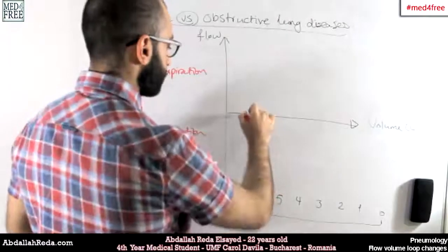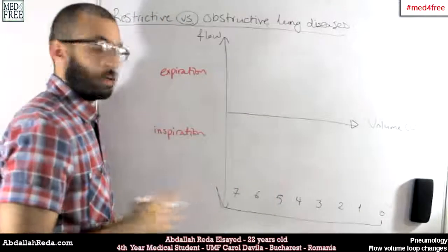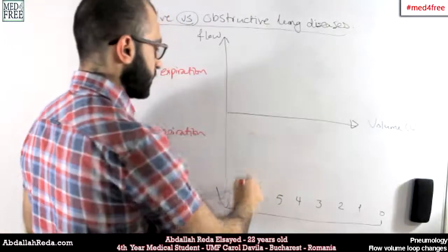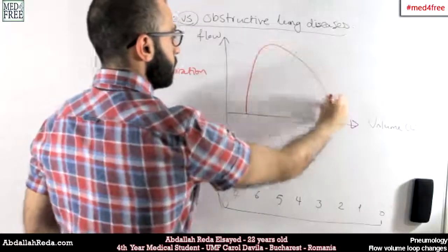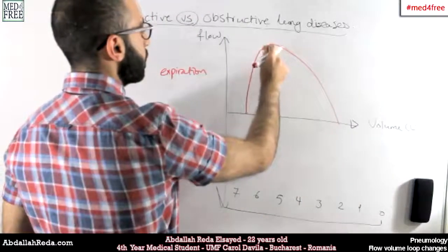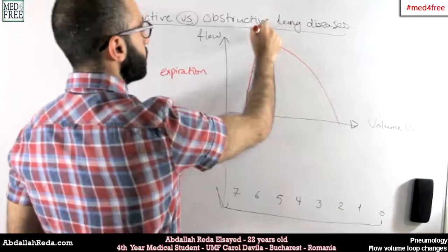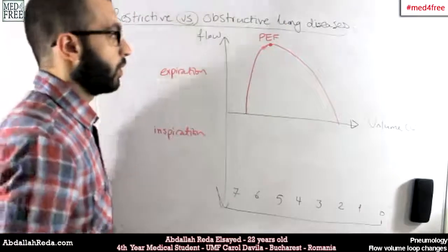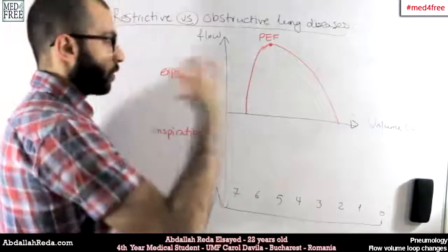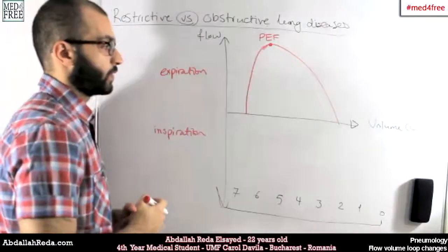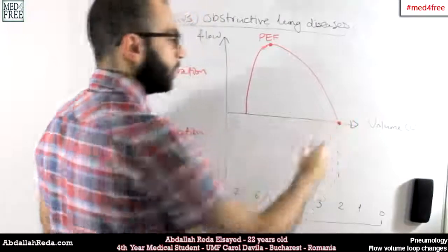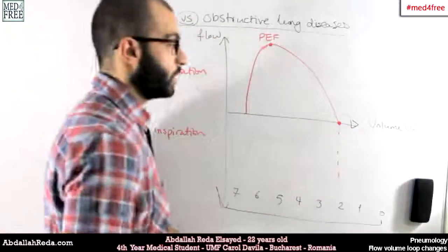In expiration, when the lung fills the most it's close to between six and seven liters. The graph will look something like this. The peak at the top is the peak expiratory flow — the maximum flow of air from the lungs to the atmosphere.